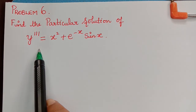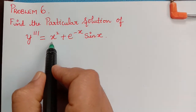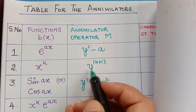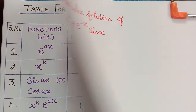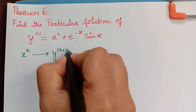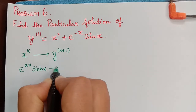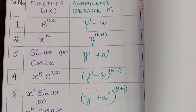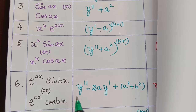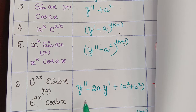First we have to write the annihilator operator capital M. For x^k, the annihilator operator is y differentiated k+1 times. For e^(ax)sin(bx), the annihilator operator is y'' - 2ay' + (a² + b²). Let us write that now.